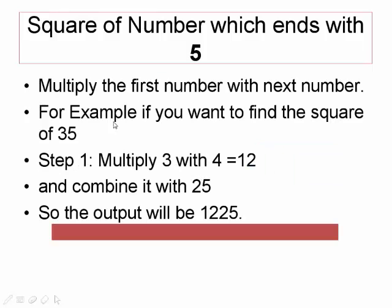It's very simple. We need to first multiply the first number with the next number which will occur. For example, suppose we need to find the square of 35. Multiply 3 with the next number which will come after 3, which is 4, and the relevant answer will be 12. And combine it with the square of 5, which we already know is 25.